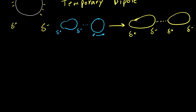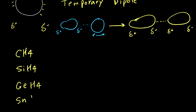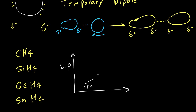Another example of dispersion force is the Group 4 hydrides. If we look at a boiling point diagram, we see CH4 has the lowest boiling point, then silicon hydride, germanium hydride, and tin hydride have progressively higher boiling points. The boiling point increases with heavier and larger molecules because boiling point depends on intermolecular forces - stronger intermolecular forces give greater boiling and melting points.